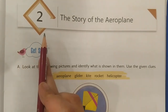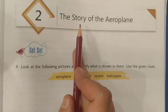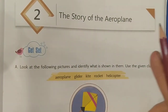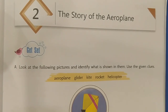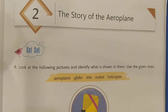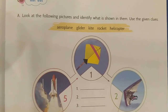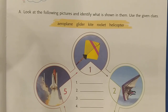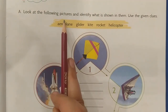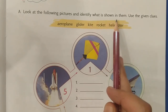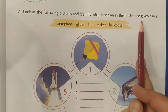Children, this is the chapter — chapter number 2, 'The Story of the Aeroplane.' It is given on page number 23 of your textbook. Now, before we actually start reading the chapter, let us identify a few things that most of you would have seen. It's a small interesting activity — look at the following pictures and identify what is shown in them. Use the given clues.